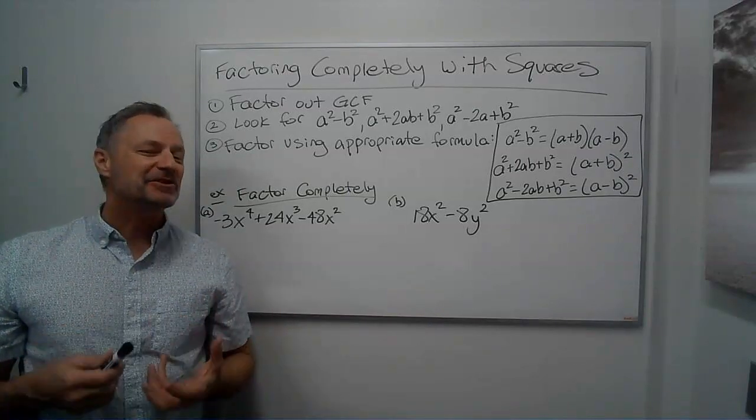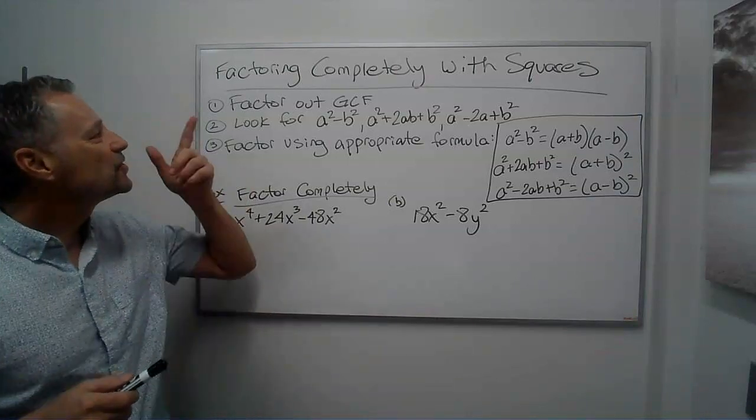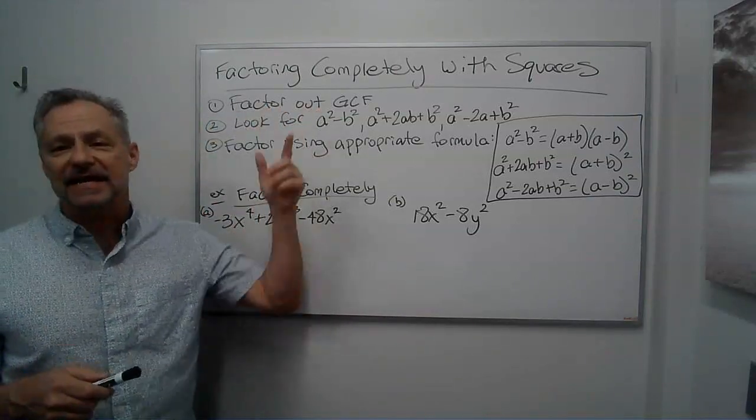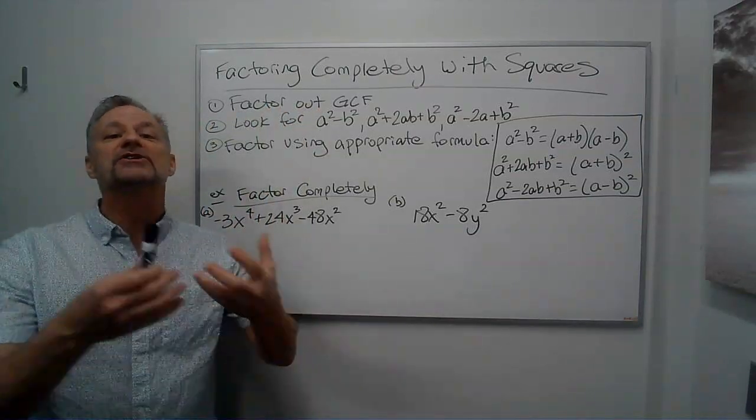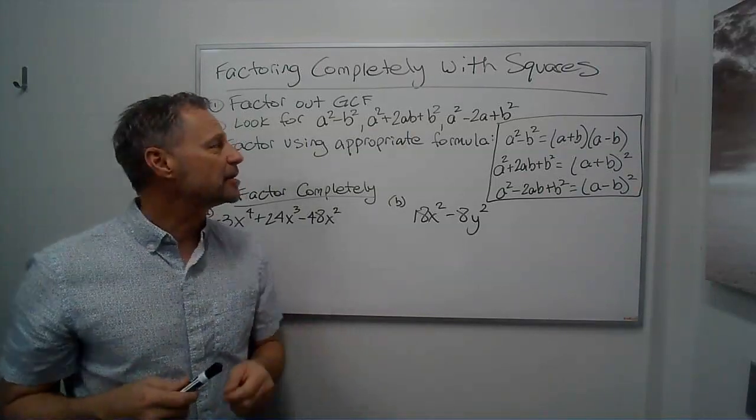Hi, it's Professor Monty. Let's look at factoring completely using squares. Alright, so the first idea is I'm going to factor out any greatest common factor I have. I'll always start with that. That's going to make the rest of the factoring easier if there is a greatest common factor.